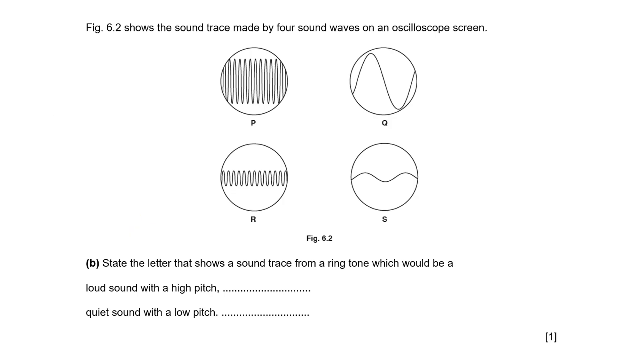We've got four sound waves on an oscilloscope. State the letter that shows a sound trace for a ringtone, which would be a loud sound with a high pitch. Loudness is measured using amplitude, so we're looking for large amplitude, either P or Q. High pitch means high frequency or a lot of waves per second, so that's clearly P. A quiet sound would have small amplitude, low pitch would have a small number of waves per second, so that's clearly S.